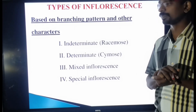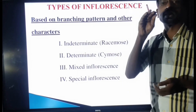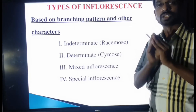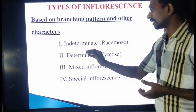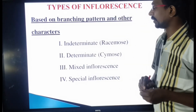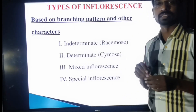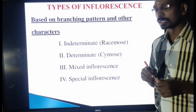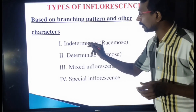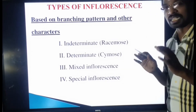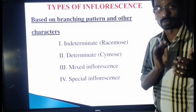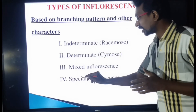The second type is determinate: here the flower first appears in the terminal region, which changes the growth of the inflorescence axis, and further growth occurs on the lateral side. Example: cymose. The third type is mixed inflorescence: it has both indeterminate and determinate characteristics — the main inflorescence axis shows indeterminate growth while the lateral growth is like determinate. The fourth type is special inflorescence: it cannot be compared to either indeterminate or determinate, so it is called a special type.